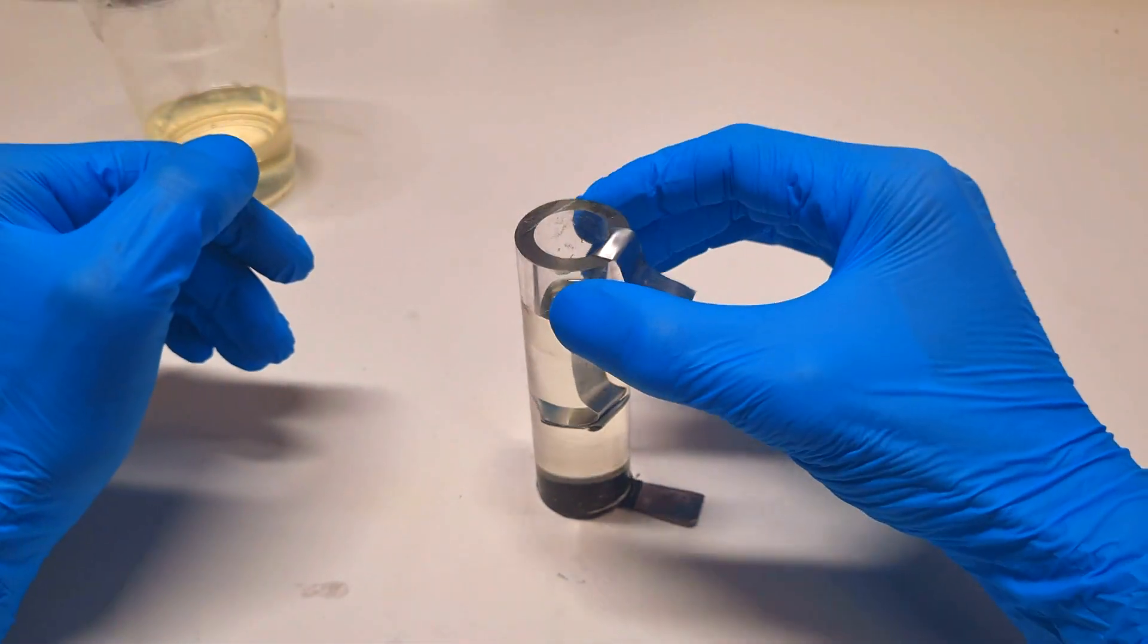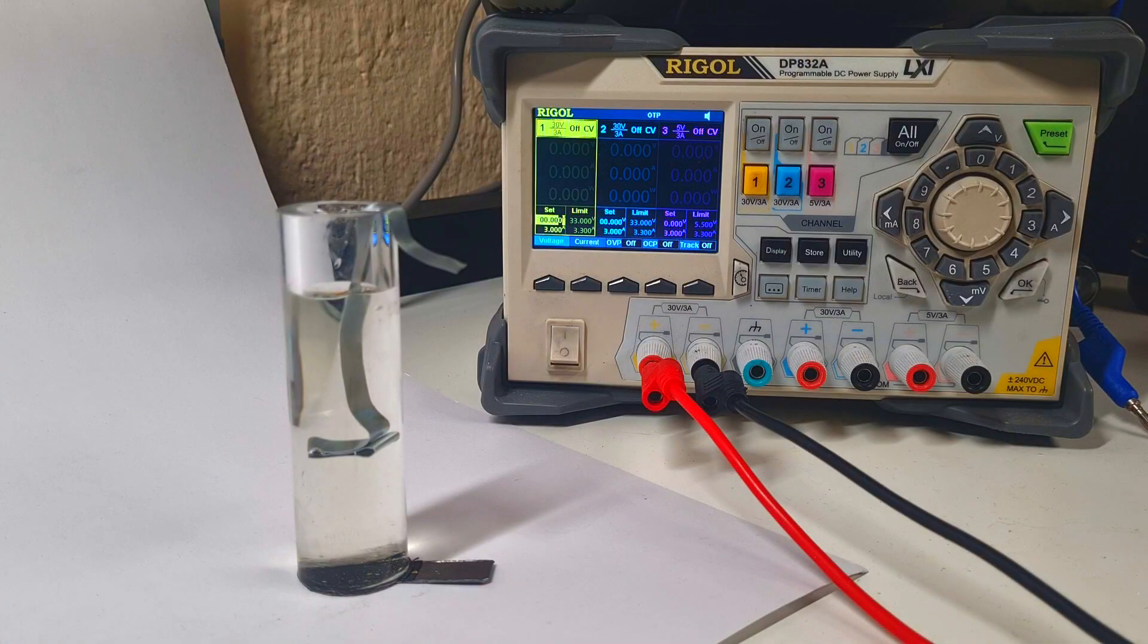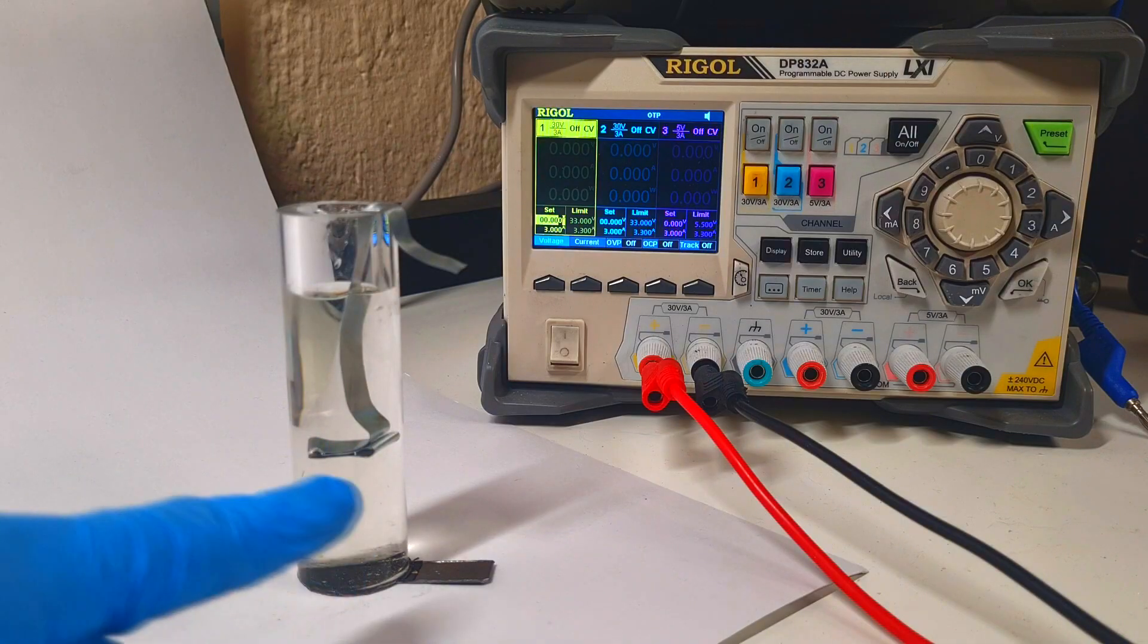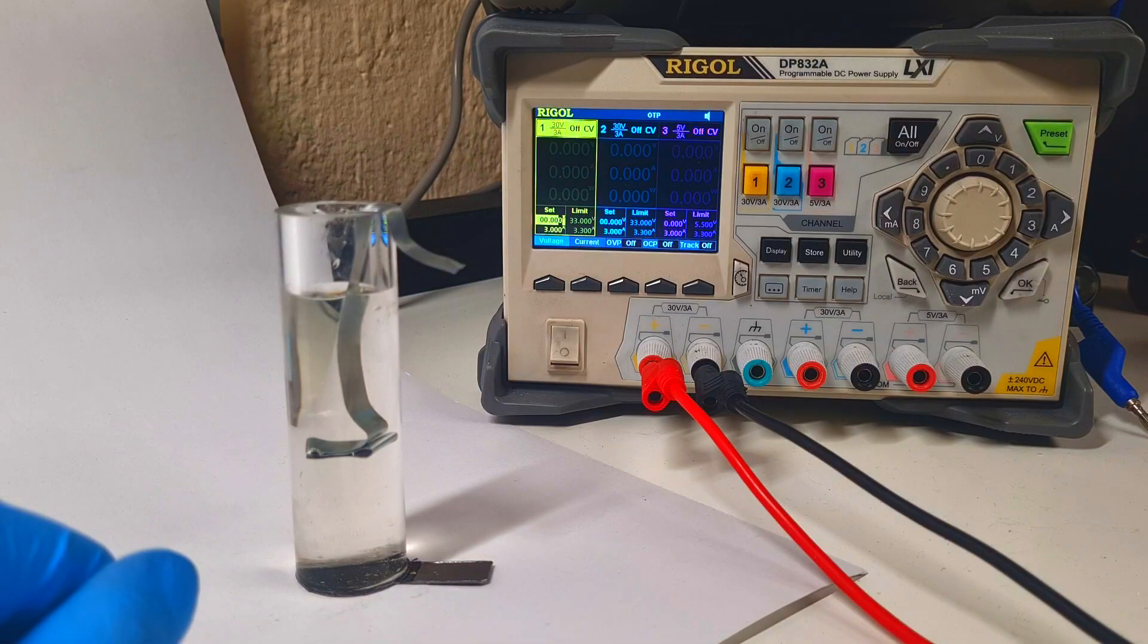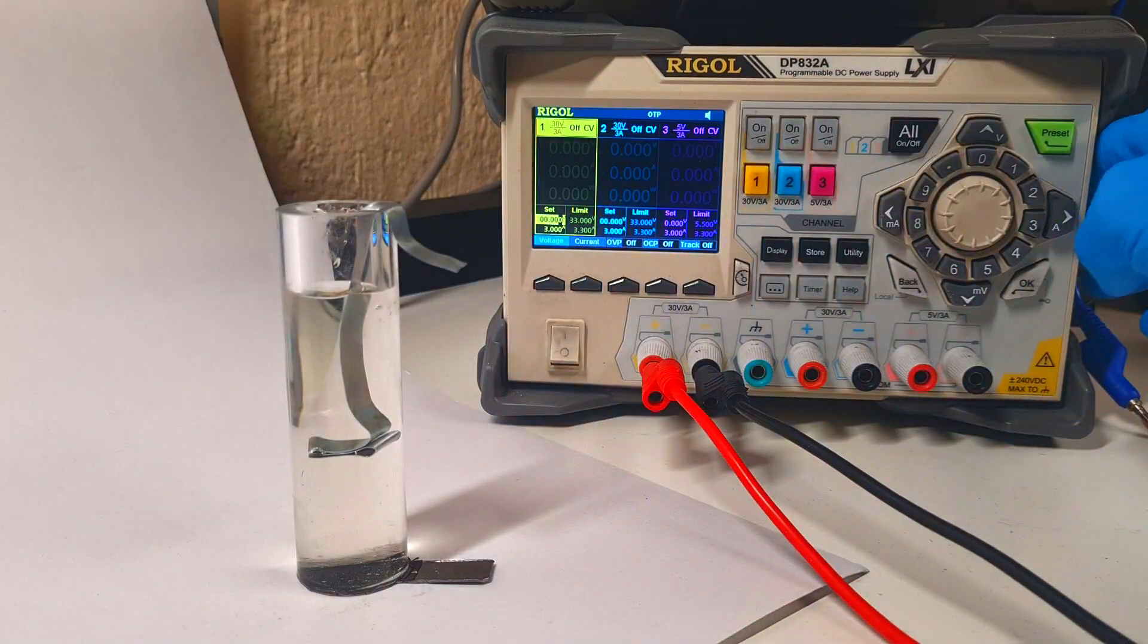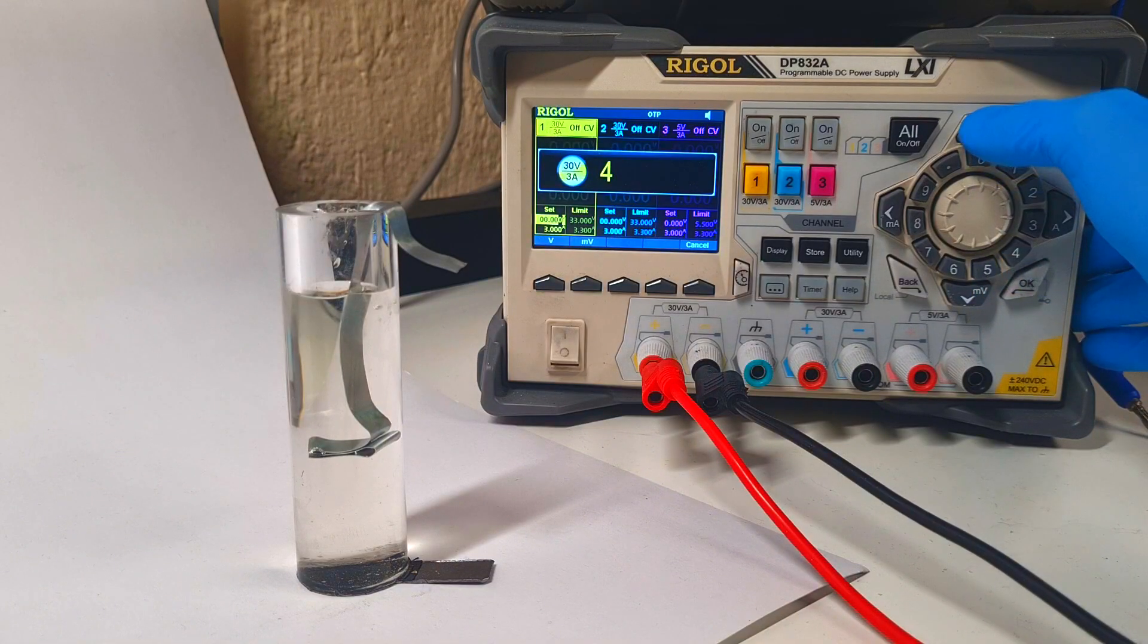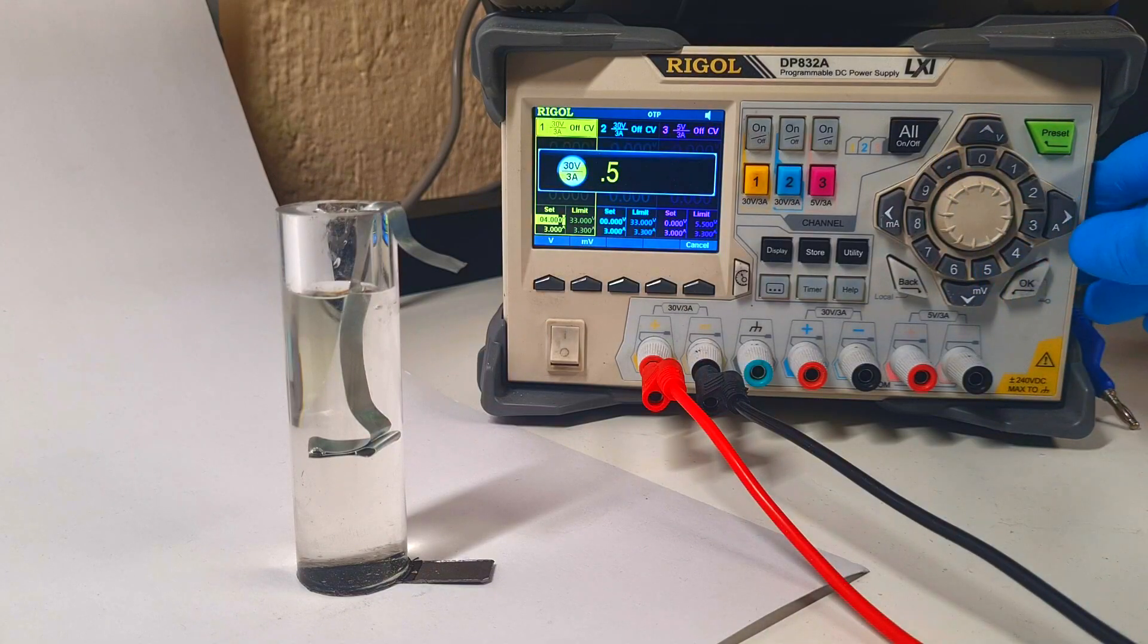For this reason now I will charge the cell. Like I said before, because the distance between the anode and the cathode is too big, for this reason the charging voltage needs to be set a little bit higher than normal. For this reason this cell I will start to charge with, let's say 4 volts and 500 milliamps.